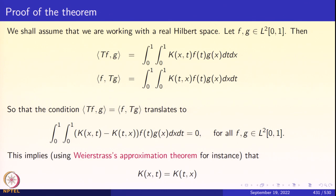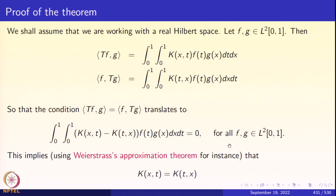We are going to work with the real Hilbert space for simplicity; minor modifications are needed for complex Hilbert spaces. For f, g in L²(0,1): ⟨Tf, g⟩ = ∫₀¹∫₀¹ k(x,t)f(t)g(x)dx dt. On the other hand, ⟨f, Tg⟩ = ∫₀¹∫₀¹ k(t,x)f(t)g(x)dx dt. The condition ⟨Tf, g⟩ = ⟨f, Tg⟩ translates to: the double integral of [k(x,t) − k(t,x)]f(t)g(x)dx dt equals 0 for all L² functions f and g.